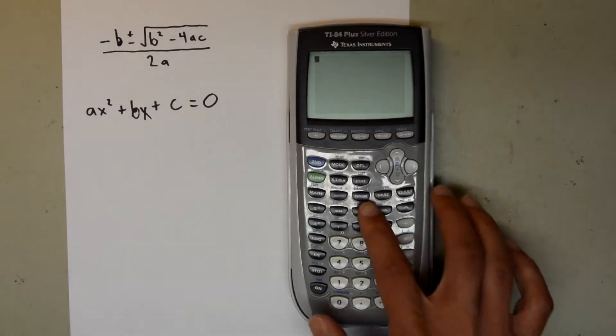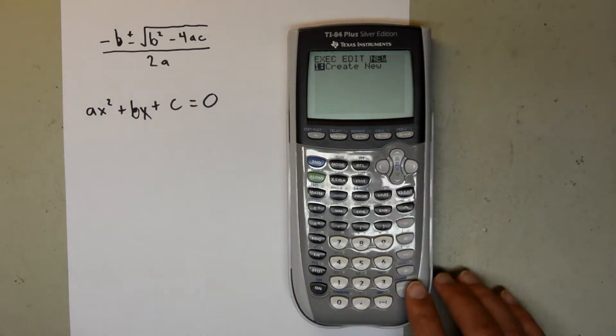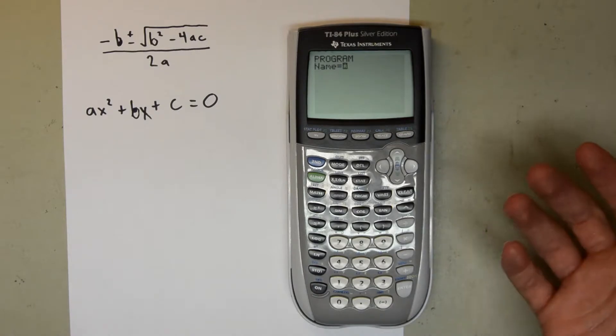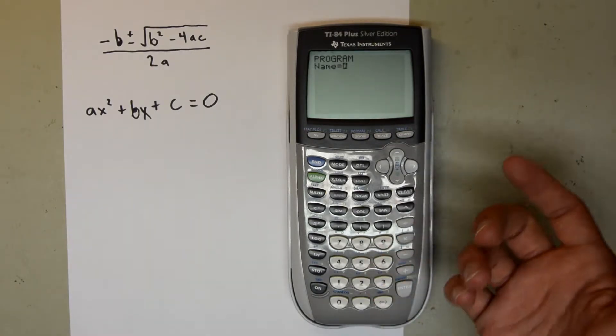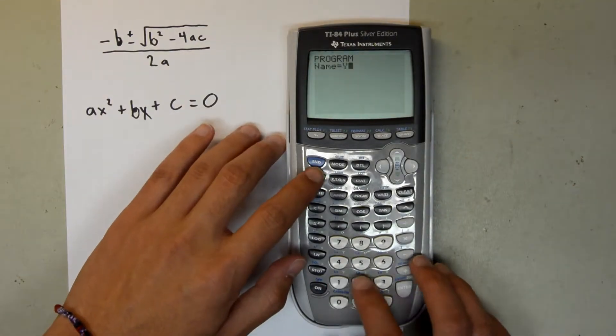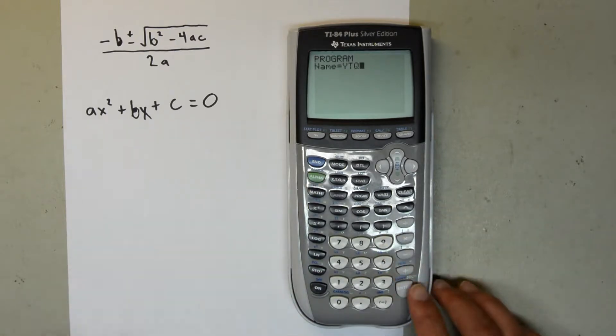So first you want to hit the program button, and scroll over to new, and click enter. Now it wants you to give it a name. I personally named mine Quad, Q-U-A-D, but for this video I'll just name it YTQ for YouTube Quad. So YTQ, and then hit enter.